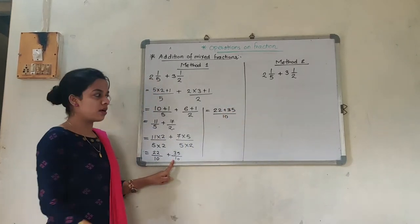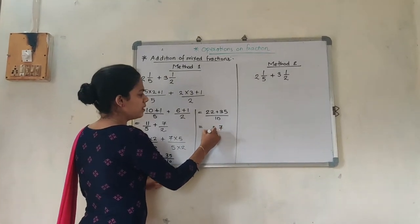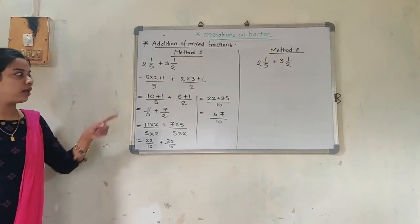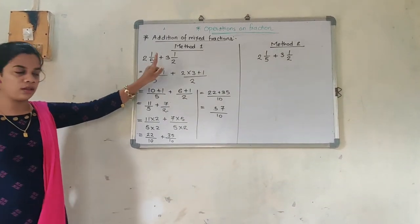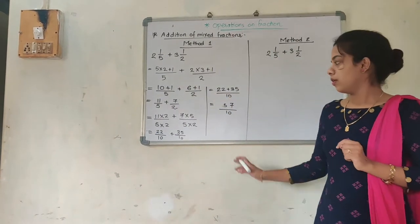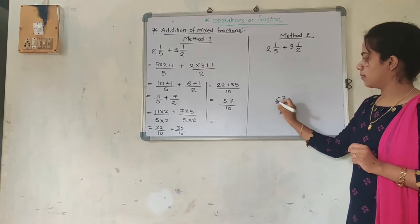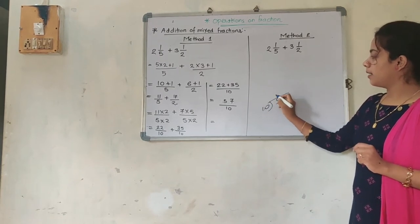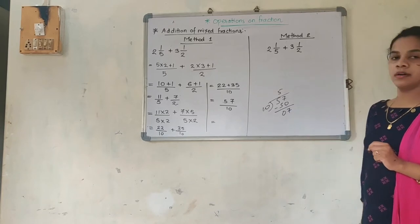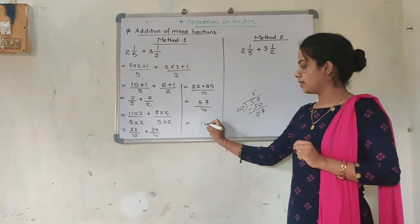That is 22 plus 35 upon 10. 22 plus 35 is 57, so we get 57 upon 10. Now, the question was in mixed fraction, so the answer I am also going to give in mixed fraction. So 57 upon 10 — if I divide 57 by 10: 10 fives are 50, and the remainder is 7. So the denominator remains 10, the quotient is 5, and the remainder is 7.